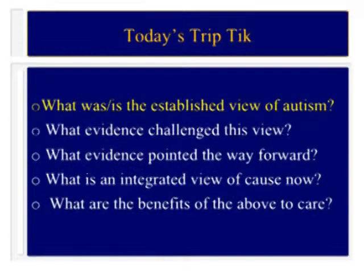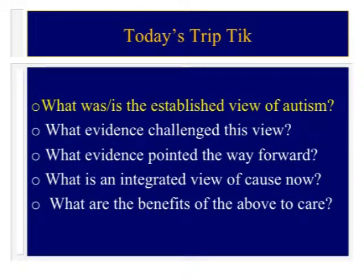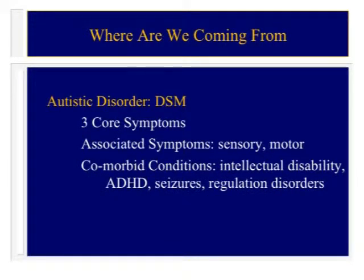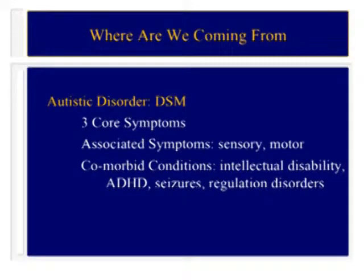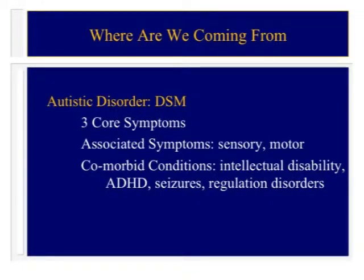In the United States we used to make what's called a triptych, a step-by-step way of getting to where you want to be at the end. The established view of autism is framed in DSM as three core symptoms, associated sensory and motor symptoms, and comorbid conditions. But by the time I'm done, I hope I will convince you that those are all part and parcel of the same problem - intellectual disability, for example, is not comorbid; it is part of the expression of the underlying disorder in autism.